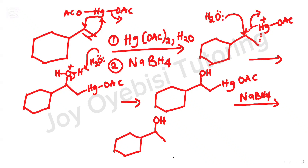Remember: when you use oxymercuration-demercuration, it doesn't form a carbocation intermediate, so there is no carbocation rearrangement. But if you use acid-catalyzed hydration, you have to rearrange to make sure you have the most stable carbocation before you add the H2O. The last one is hydroboration — we're using the same molecule so you can see how different all the products formed look.